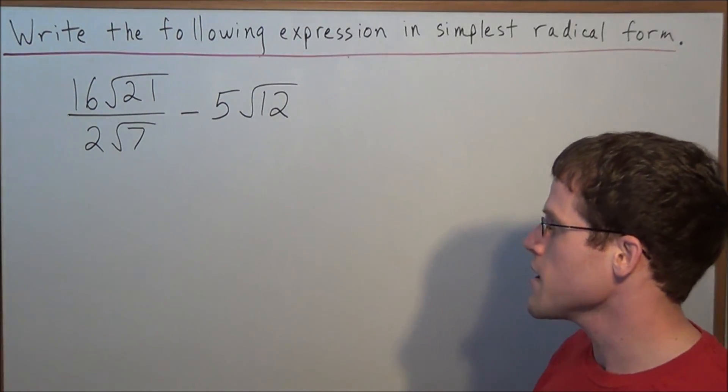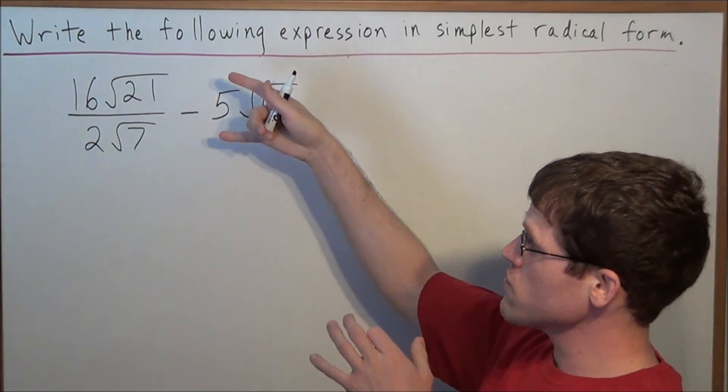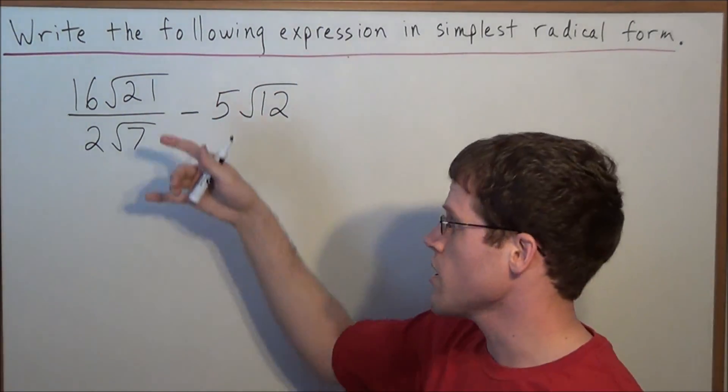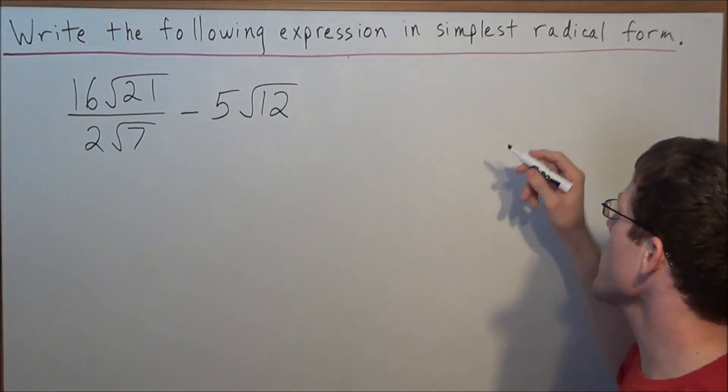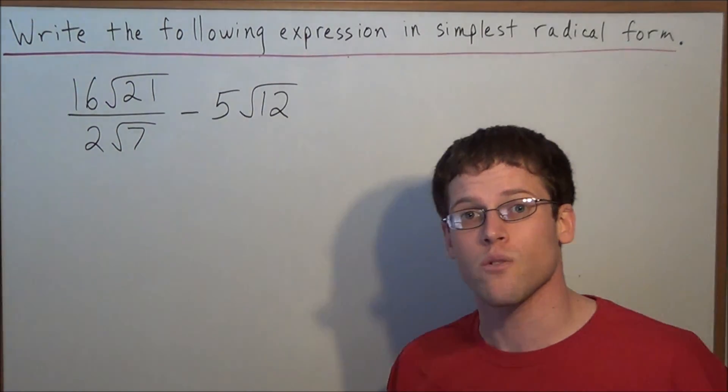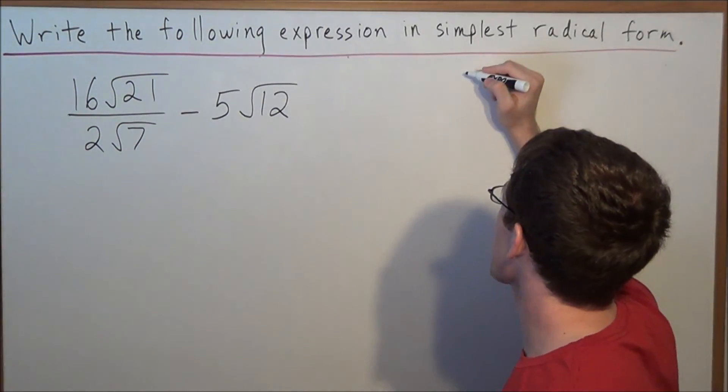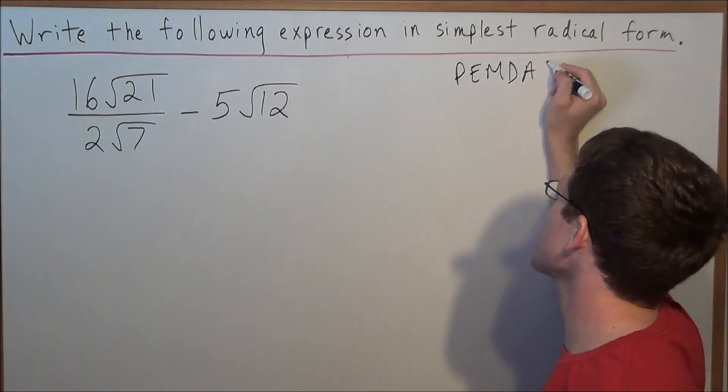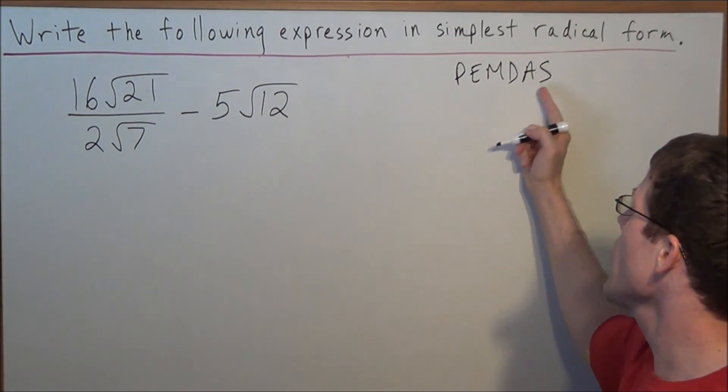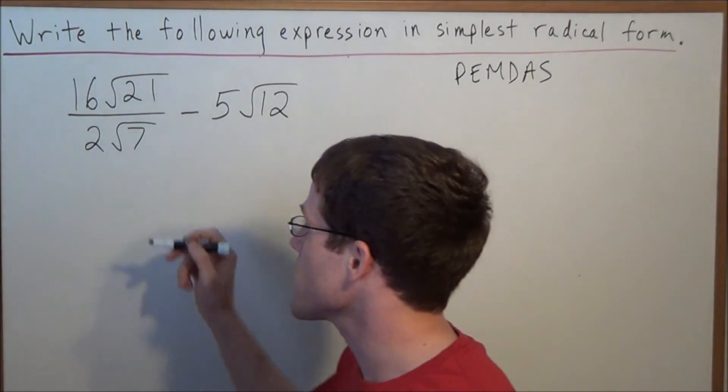For an example of this type, we have two main operations going on. We're dividing two radicals, and then we're subtracting another radical. So one way to help you distinguish which order to go in, you can think of the order of operations. Since we're really looking at division and subtraction, we can take care of the division of radicals first.